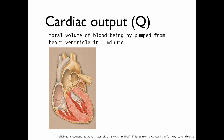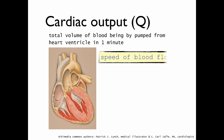Let's start with cardiac output. We can think about cardiac output as the total volume of blood being pumped from the heart ventricle in one minute. This is our left ventricle, and the cardiac output will be how much blood leaves this ventricle every minute. So we can think about cardiac output as the speed of blood flow through the body.